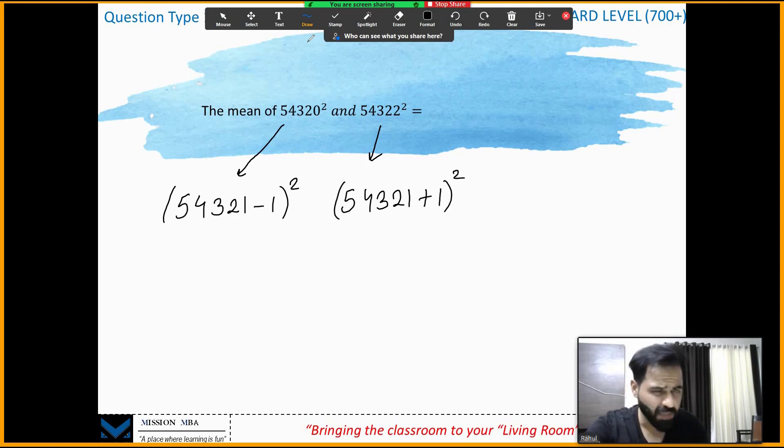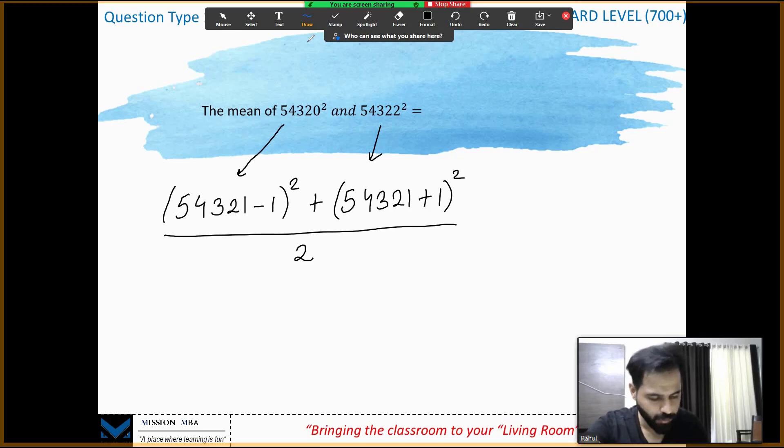You're looking for the mean, so sum of the numbers divided by number of the numbers. Now this is (a - b)² and this is (a + b)². Assume this as a, this as b.